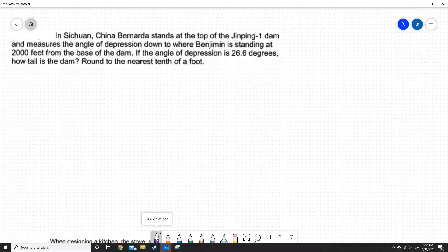The first question we're going to go over is a right triangle trig problem. In Sichuan, China, Bernarda stands at the top of the Jinping 1 dam and measures the angle of depression down to where Benjamin is standing at 2,000 feet from the base of the dam. If the angle of depression is 26.6 degrees, how tall is the dam? Round to the nearest tenth of a foot.